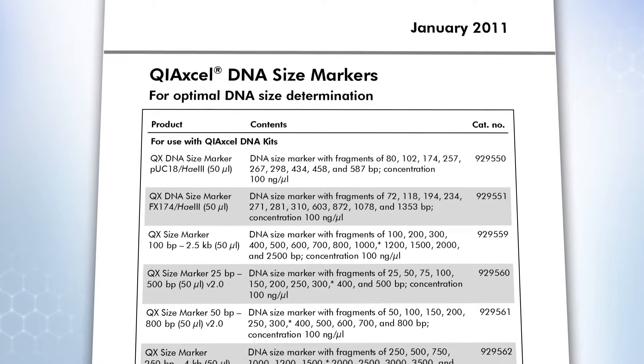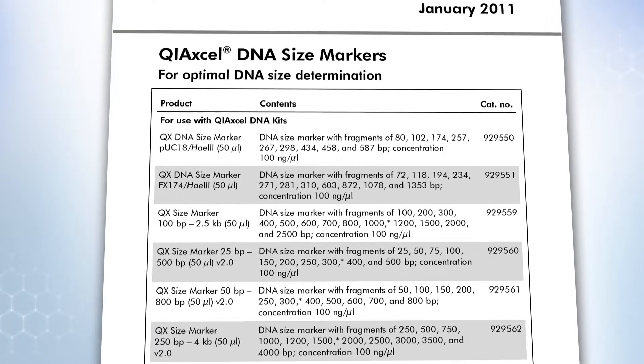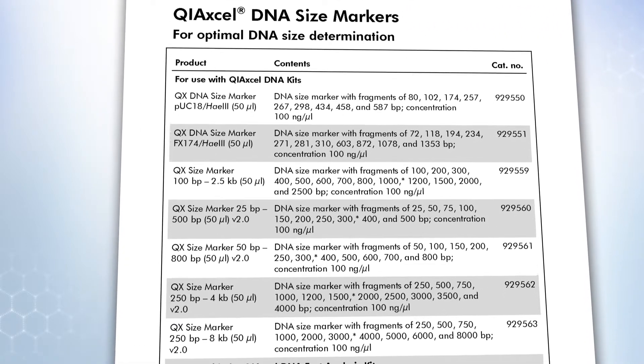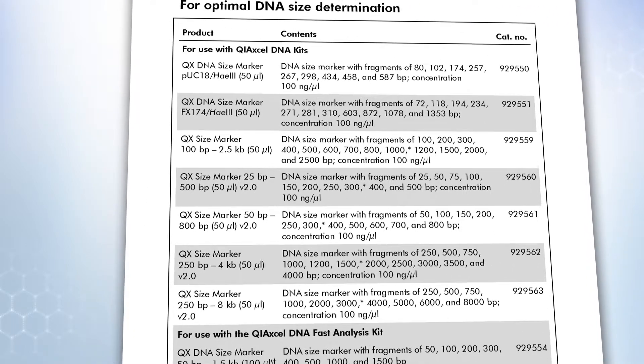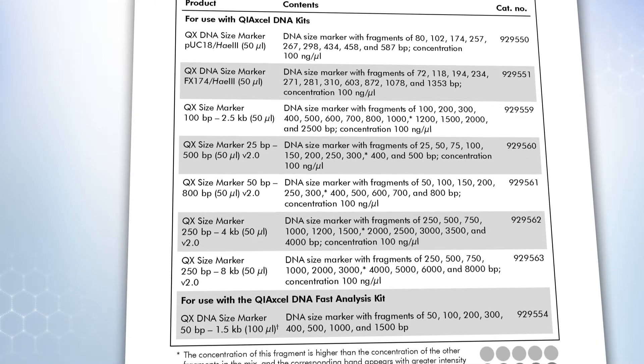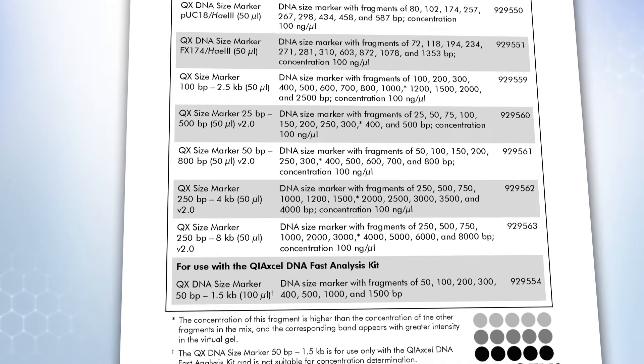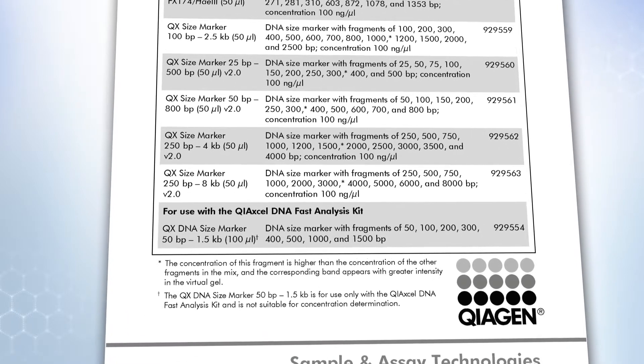The reference marker can be applied in future runs when using the same cartridge and method without having to run the size marker again. The QIAXcel Fast Analysis Kit includes a ready-to-use size marker which should be used undiluted.